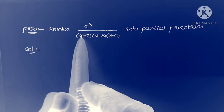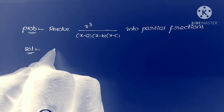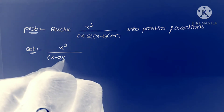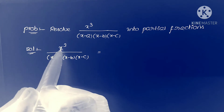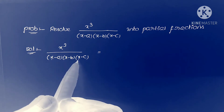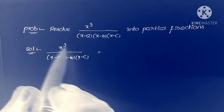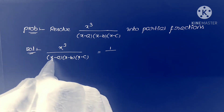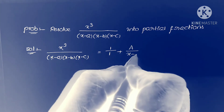First problem: resolve x³ / [(x-a)(x-b)(x-c)] into partial fractions. We write the given fraction x³ / [(x-a)(x-b)(x-c)]. Here the degree of x³ equals 3, and the denominator also has degree 3, so both numerator and denominator have the same power. We take the ratio of the leading coefficients: x³ coefficient in numerator is 1, and in denominator is also 1, giving 1/1.